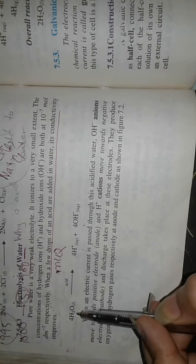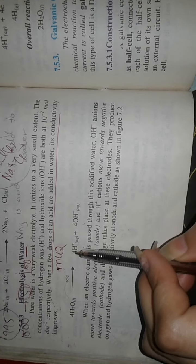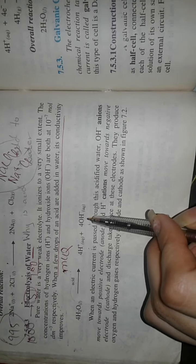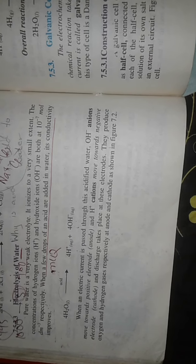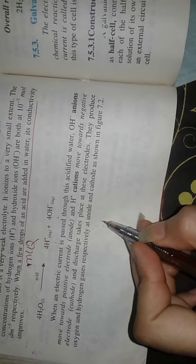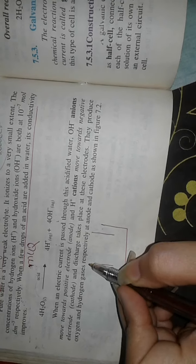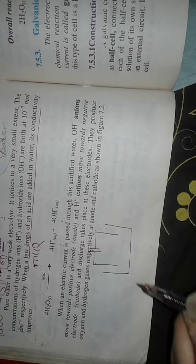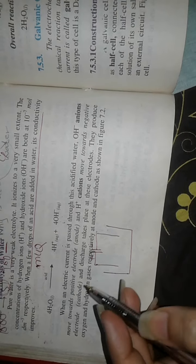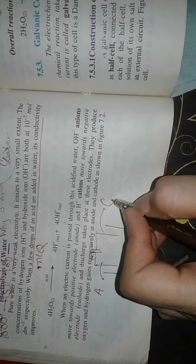Water decomposes into H positive and OH negative ions. Now recall the structural diagram of the electrolytic cell. If I draw the electrodes, these are the positive terminal and negative terminal.